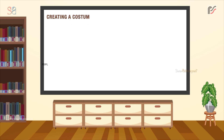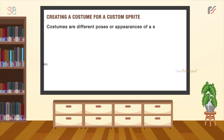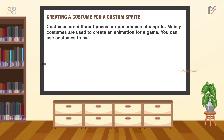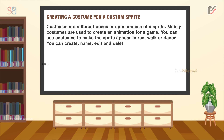Now, creating a costume for a custom sprite. Costumes are different poses or appearances of a sprite. Mainly, costumes are used to create an animation for a game. You can use costumes to make the sprite appear to run, walk or dance. You can create, name, edit and delete any number of costumes.